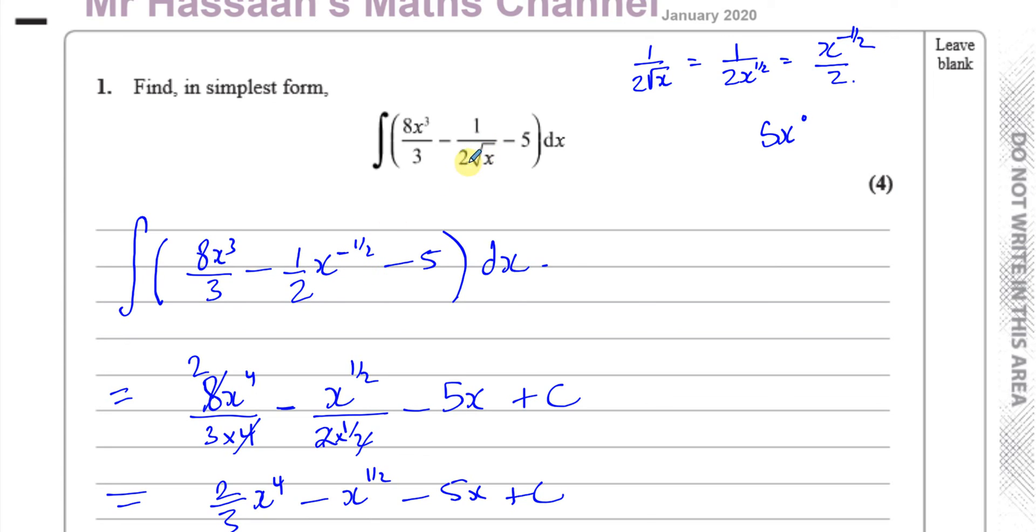You have to make x to the power of 1 half. The 2 doesn't go up with it. The square root is only on the x. The power of 1 half is only on the x. So it's x that goes up. It becomes x to the power of minus 1 half over 2.